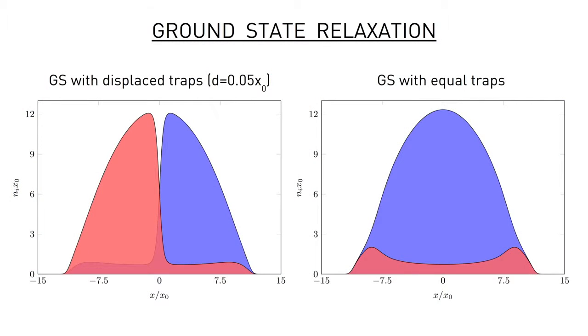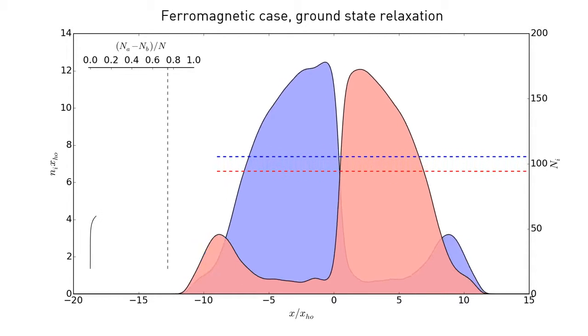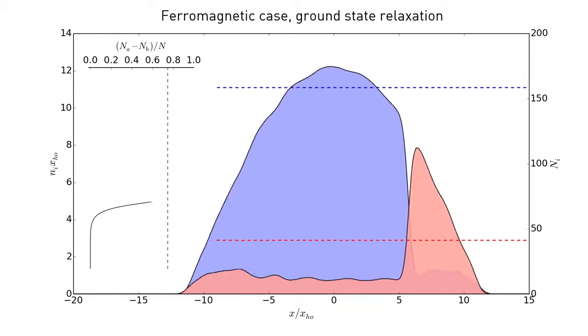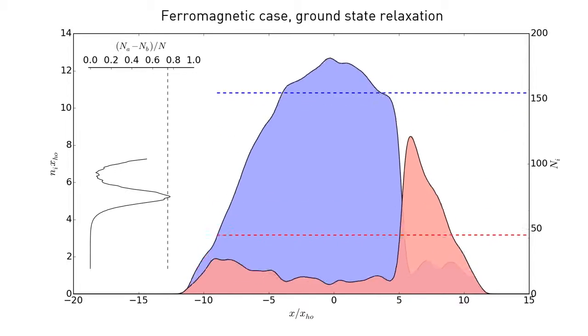In the ferromagnetic case, instead, the initial configuration is globally unpolarized, while the final ground state is the polarized one. So, as one can expect, the dynamics in this case is very complex and highly non-linear. In the numerical simulation, we see that after the quench the system seems to be only slightly perturbed. However, after a while, it finds its way towards the real ground state magnetization, and it starts jumping back and forth, finally relaxing to the true ground state.